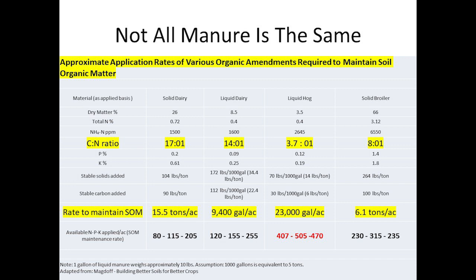Looking at NPK, those are not unreasonable numbers. It typically takes about 20 pounds of phosphorus to raise your soil test level about one part per million, so we'd be raising it five to eight parts per million — still reasonable. Nitrogen is not out of whack either, so you could be putting that on, meeting your crop needs, maintaining your soil organic matter, and not degrading the environment. That's the sweet spot.